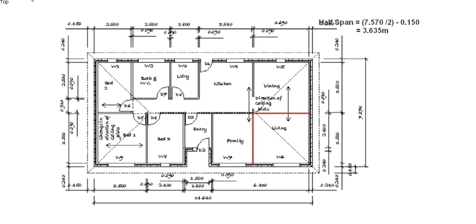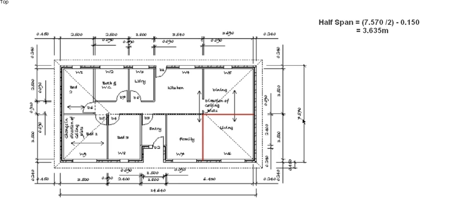First, we need to work out the half span of our building. The overall width of the building in this case is 7.570m, and we divide it by two to get our half span. However, this is a brick veneer building with a brick and cavity on the outside equal to 150mm, so we have to make that deduction because the roof doesn't sit on the brickwork — it sits on the timber frame on the inside. So: width divided by two, minus brick and cavity, gives us a half span of 3.635m.